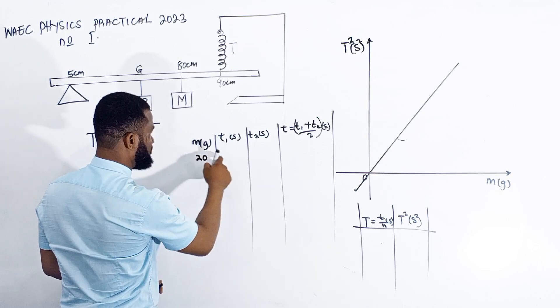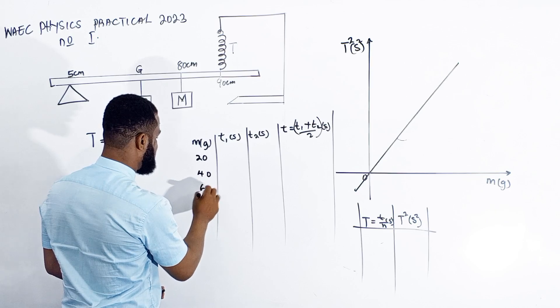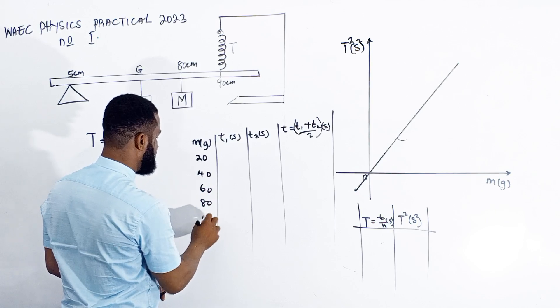For every mass—20 grams, 40, 60, 80, and probably 100—there is a time recorded.